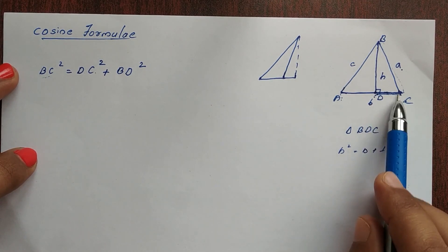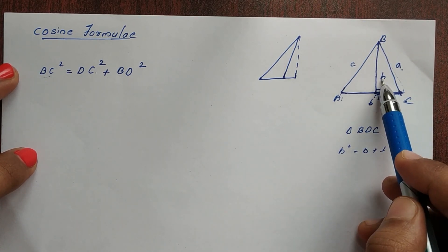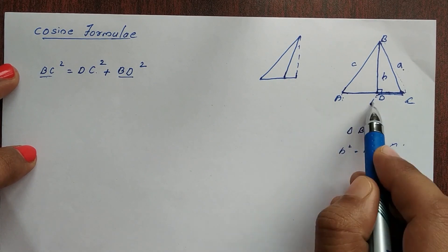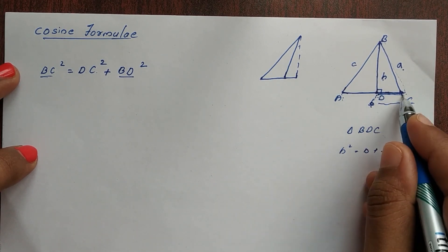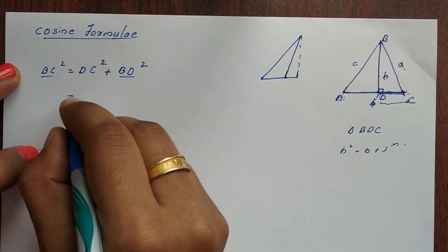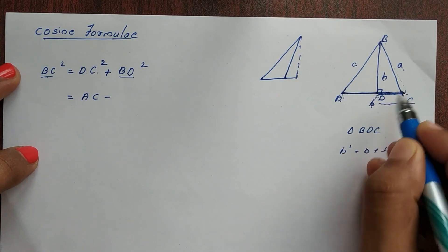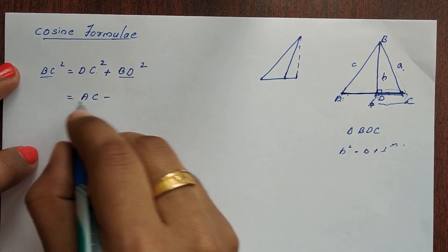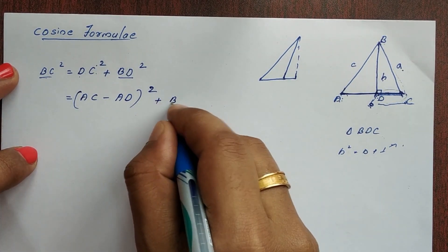Now BC is side a. DC — we want to express DC as AC minus AD. BD is our perpendicular h. So DC is AC minus AD. If you square this, DC² = (AC − AD)². So a² = (AC − AD)² + BD².